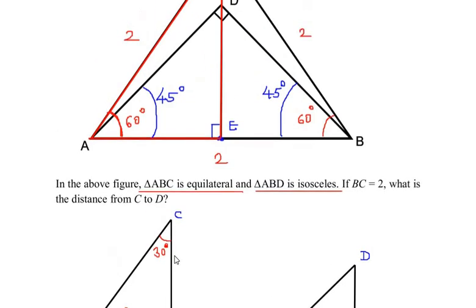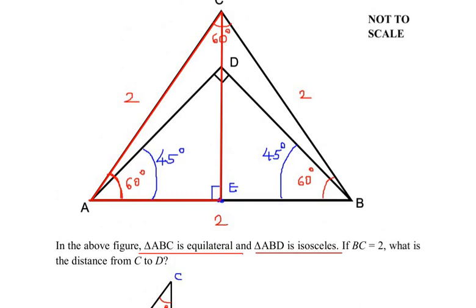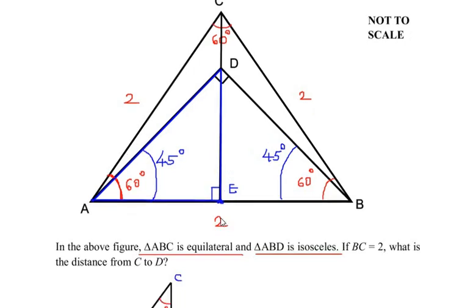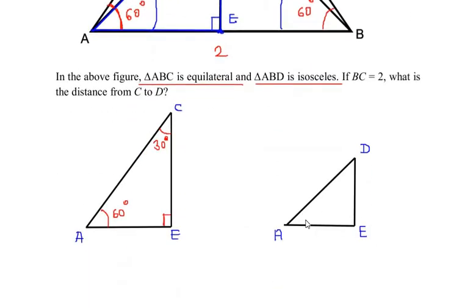Now let us look at the smaller triangle ADE. In this triangle, angle A is 45 and angle E is 90. By the angle sum property, angle D is 45 degrees as well. It is isosceles because two angles are equal, so the respective sides are also equal.